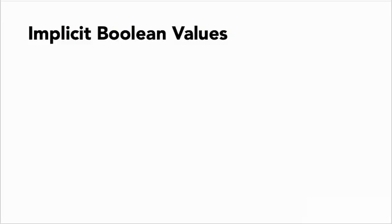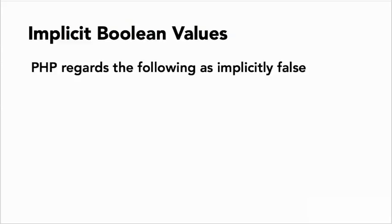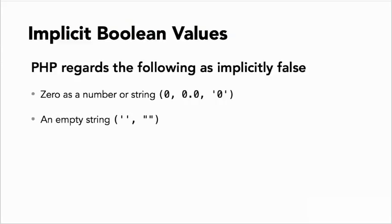In addition to the explicit Boolean keywords true and false, PHP supports the concept of implicit Booleans. Sometimes you'll hear these referred to as truthy and falsy values. The following values are regarded as false in PHP: 0 as a number or enclosed in quotes, an empty string—in other words, single or double quotes with no space in between—and an empty array.